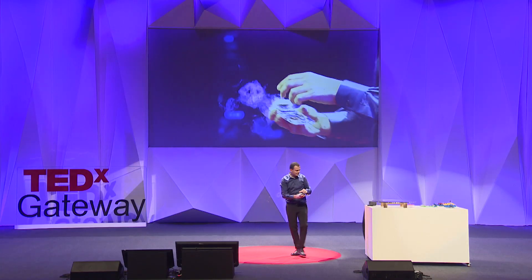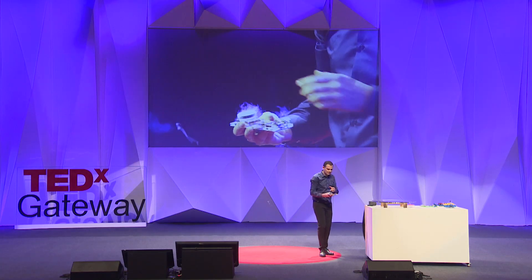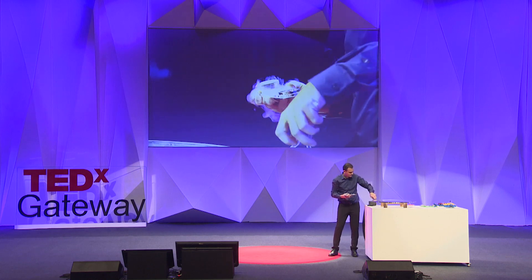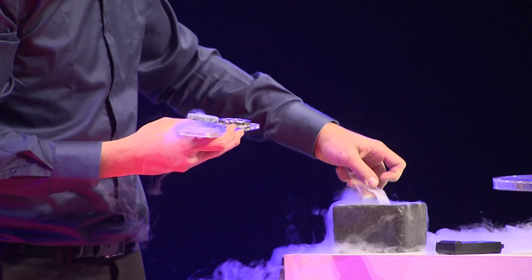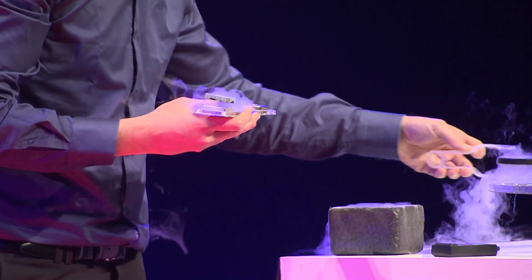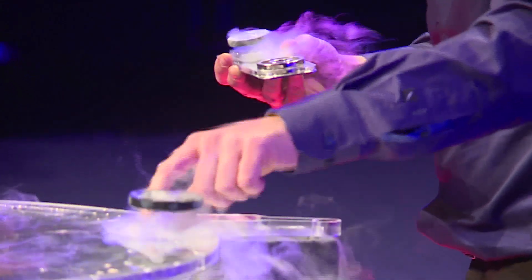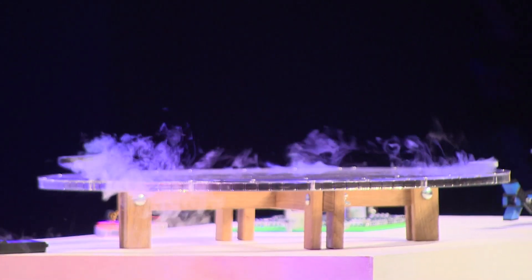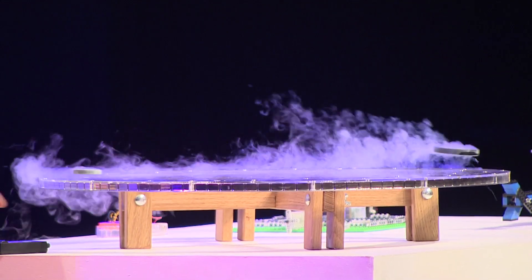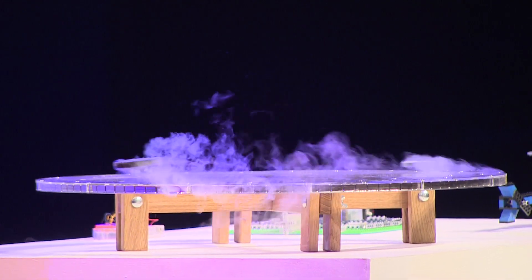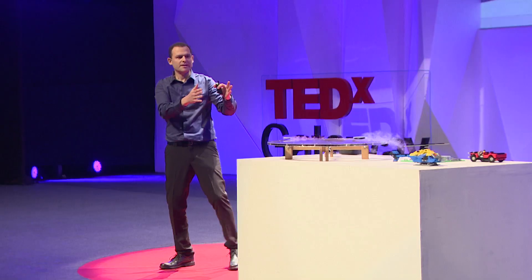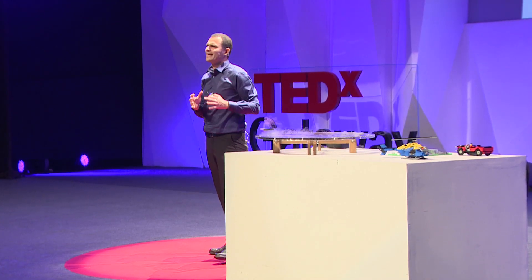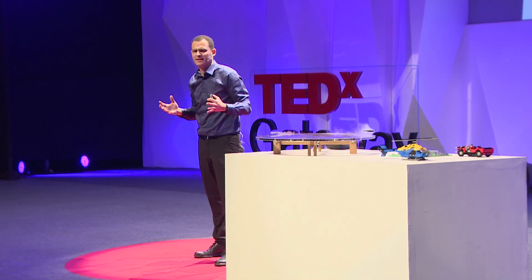I can even take this disk, or another disk — let's try it with two disks — and put it over this magnetic rail, and it just moves without any friction. This is quantum levitation. It's a quantum mechanical effect, quantum physics.